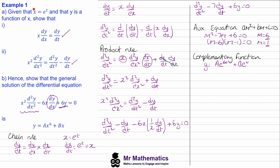But we said that x equals e to the t, so we can write this in terms of x. If x equals e^t, then t equals ln(x). So y equals A·e^(6·ln x) plus B·e^(ln x). Using the power rule to bring the exponent up, and noting that e and ln cancel for both terms, our general solution is y equals A·x⁶ plus B·x.